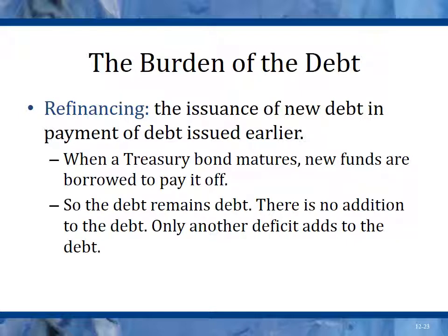The burden of debt includes refinancing — the issue of new debt to pay off debt issued earlier. When one treasury bond matures, another one has to be sold to pay it off, so the debt always stays as debt. Only another deficit adds to the debt. When the government has to pay back a treasury bond, it typically borrows money to pay back its debtors. If you buy a treasury bond in 1980 and it comes due in 2010, the government has to borrow money and increase the deficit to pay you back — it's a never-ending cycle.